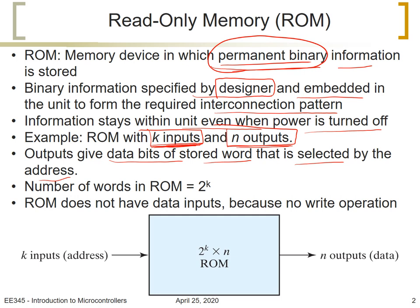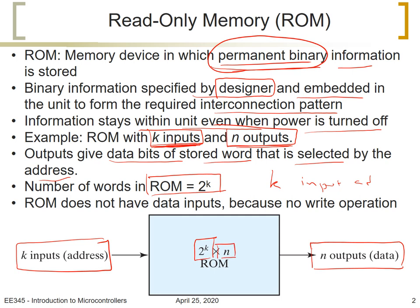The number of words in a ROM, if we assume it is equal to 2 to the power K, this means we need K input lines or K address lines. This is a block diagram of the ROM that has K inputs which are addresses and N outputs which is the data. The ROM itself will be 2 to the power K words by N bits per word.